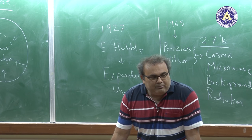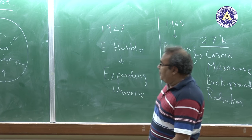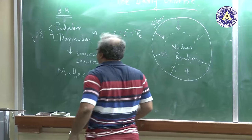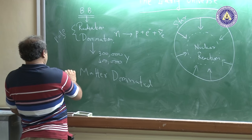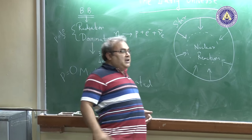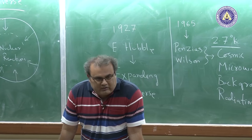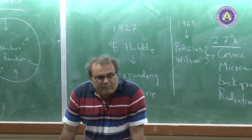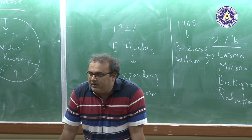In the radiation dominated phase, the equation of state is p = (1/3)ρ. Around 300,000 to 400,000 years, near the formation of the CMB, the universe transformed into a matter dominated state where the equation of state is p = 0 — a non-relativistic regime where the pressure is much much smaller than the energy density.